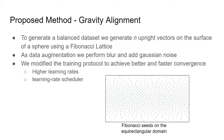To rotate the images, we generate upright vectors on the surface of a sphere using a Fibonacci lattice. As data augmentation, we perform blur and add Gaussian noise. We also modify the training protocol to achieve better and faster convergence compared to Deep360Up. In our training, we use higher learning rates and a learning rate scheduler. This reduces the training time by a factor of 4.